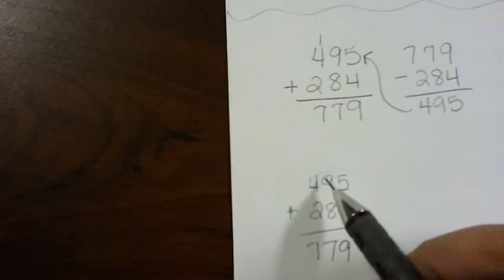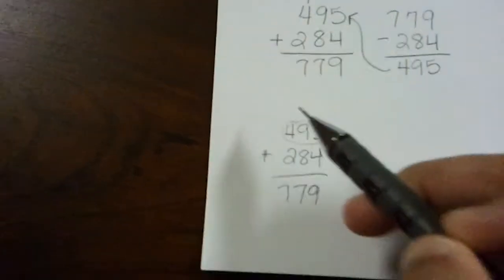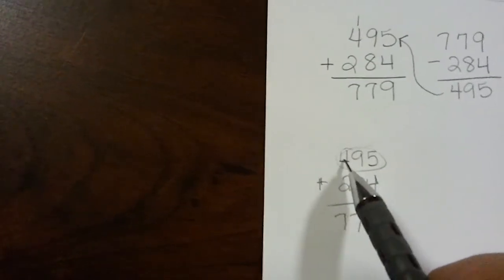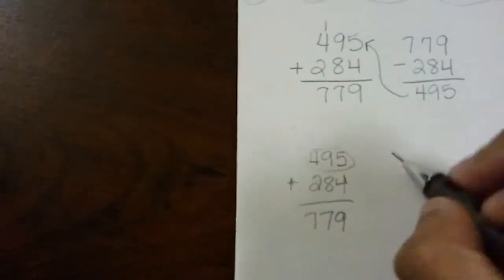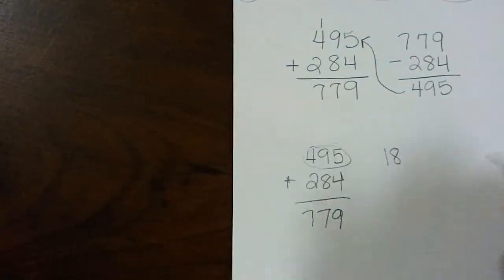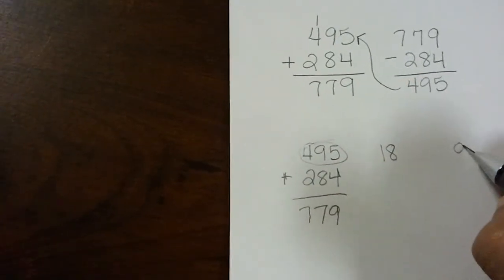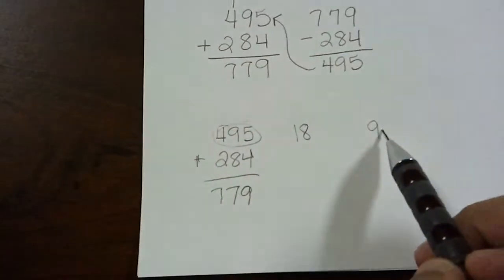Find the digital root of the first number, 495. 5 plus 4 equals 9. 9 plus 9 equals 18. Add 1 and 8 together, you get 9. So the digital root of that number is 9.